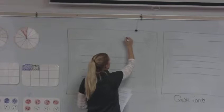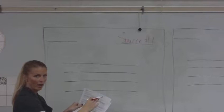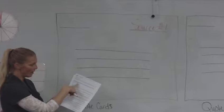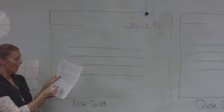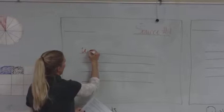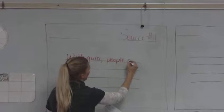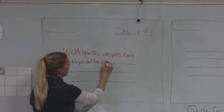So I'm going to put up here, I'm going to go source number one, because I've written on here source number one. But I could, if I wanted to, I could put the title of this article, so then I could put the title here. Or the author here says Patrick Johnson, so maybe I just want to put Patrick Johnson here. So source number one, it says people can stop terror attacks with firearms. So I'm going to put with guns, people can stop attacks.